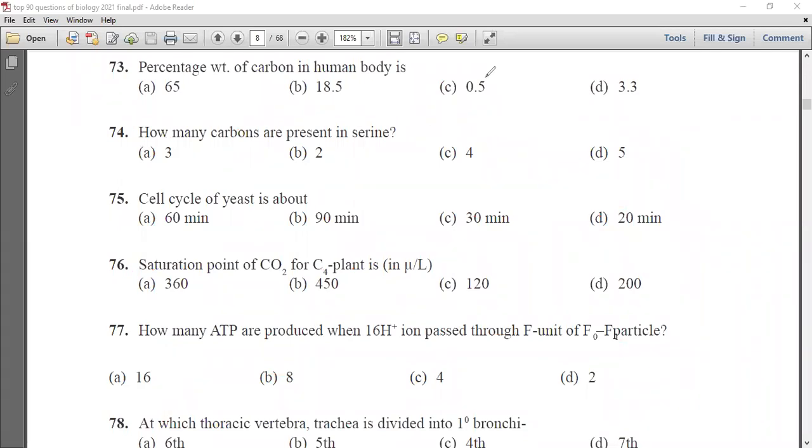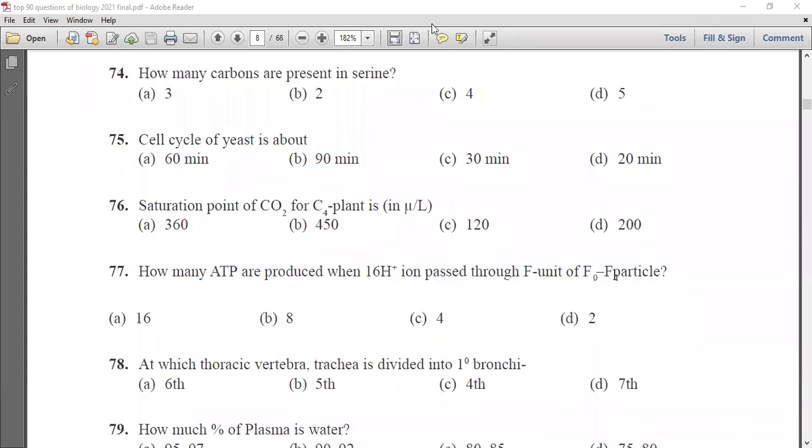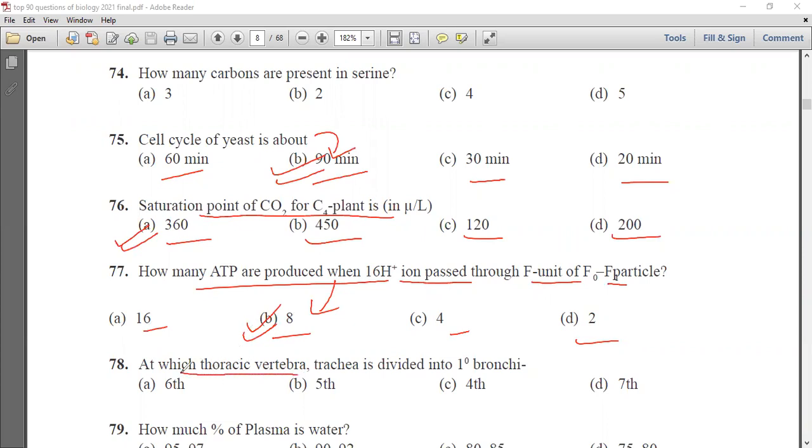Cell cycle of yeast is about 60, 90, 30 or 20 minutes. Cell cycle of yeast is about 90 minutes. Saturation point of CO2 for C4 plant is 360, 450, 120 or 200. The correct answer is 360. How many ATPs are produced when 16 hydrogen ions pass through F0-F1 particle? 16, 8, 4 or 2. 8 ATPs are produced. At which thoracic vertebra is trachea divided into one bronchi? 6th, 5th, 4th or 7th. At 5th thoracic vertebra it is divided.